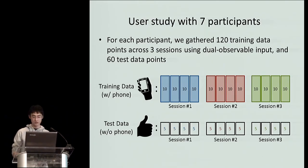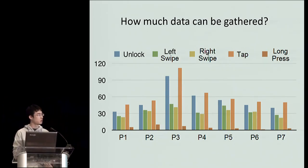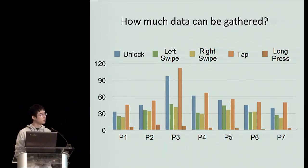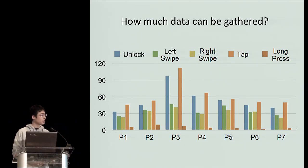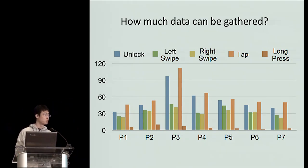We focused our analysis along four major angles. First, we measured how often users perform the gestures left swipe, right swipe, tap, and long press over the course of a day. The participants performed over 100 gestures on the lock screen and launcher alone over the course of a day, which is in line with estimates from other similar studies. Note that every time a user interacts with a phone, they may perform multiple gestures. These results suggest that there is potentially a lot of training data that can be gathered using the dual-observable input approach.